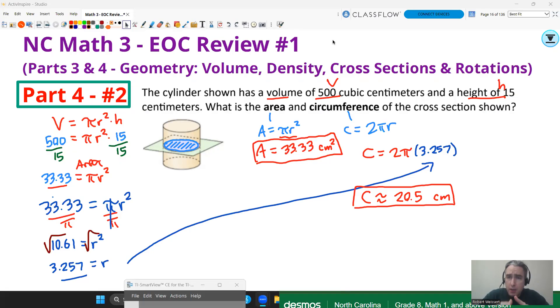Remember, volume is cubic units, area is square units, and circumference, radius, diameter, all those lengths would be just units - centimeters in that case. That concludes this video, parts three and four. The next video and the last video of this review will be covering equations of circles in the coordinate plane. Stay tuned.